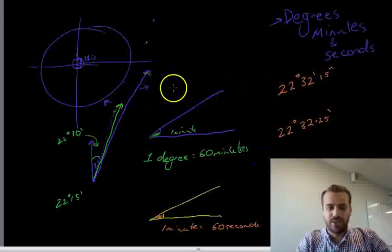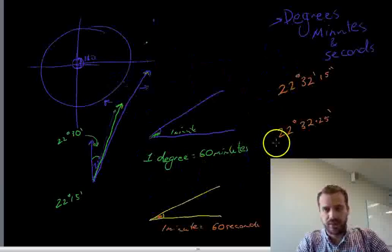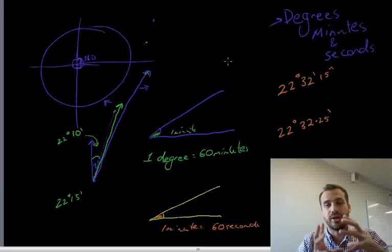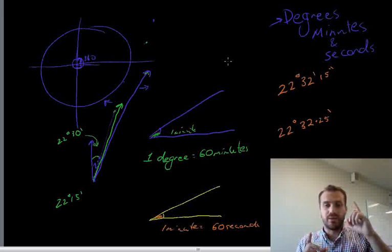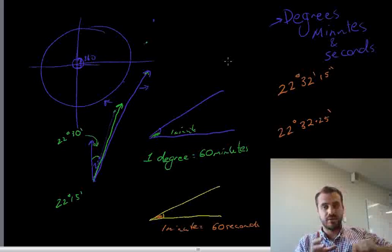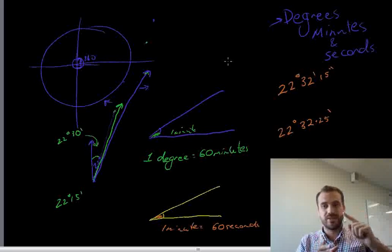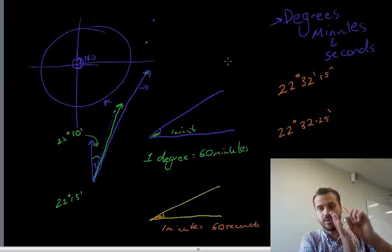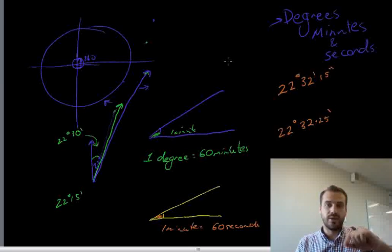Now, I've drawn a lot of pictures here. I've done a lot of scribbling. But I just want you to get this one key idea. 360 degrees in a circle. 60 minutes in one degree. One degree, 60 minutes.